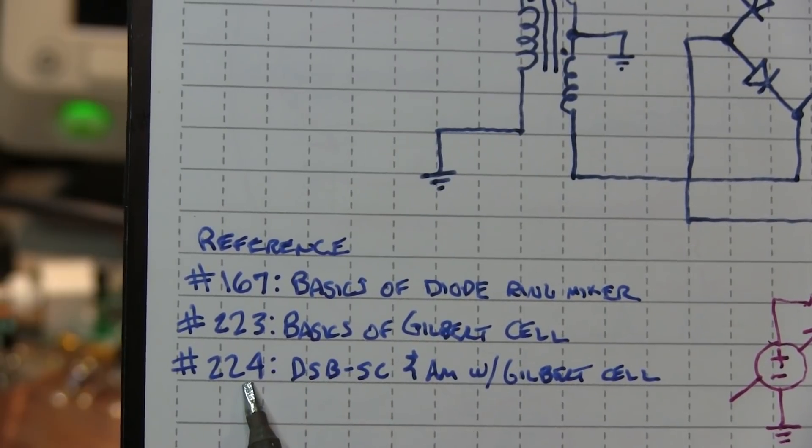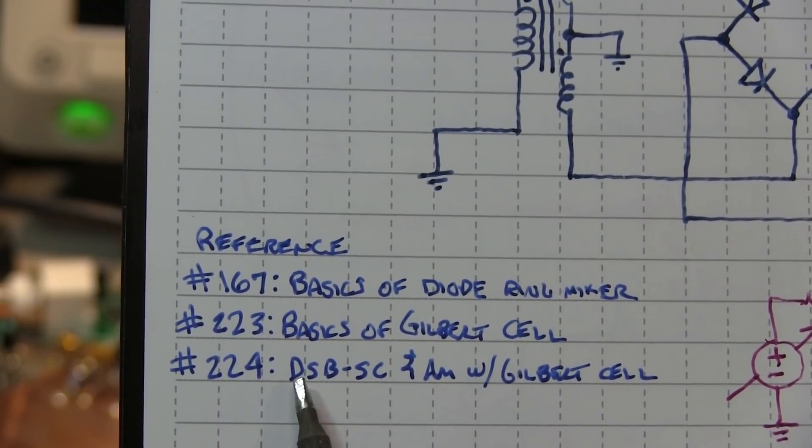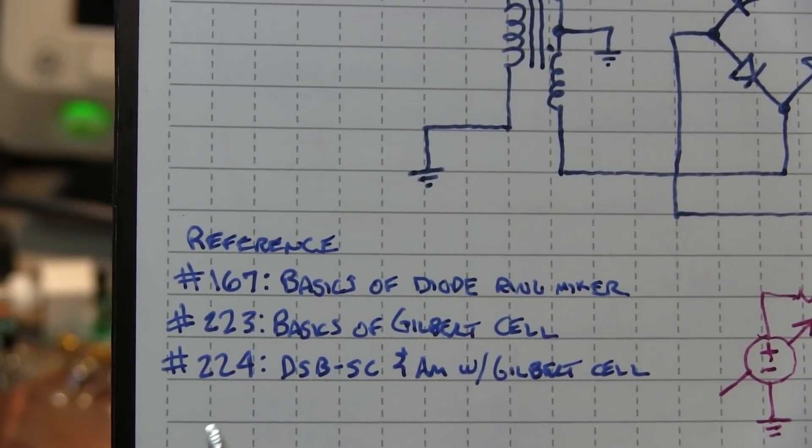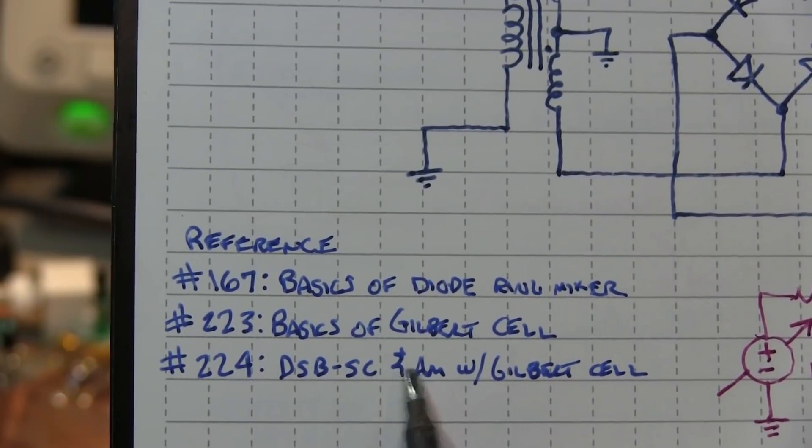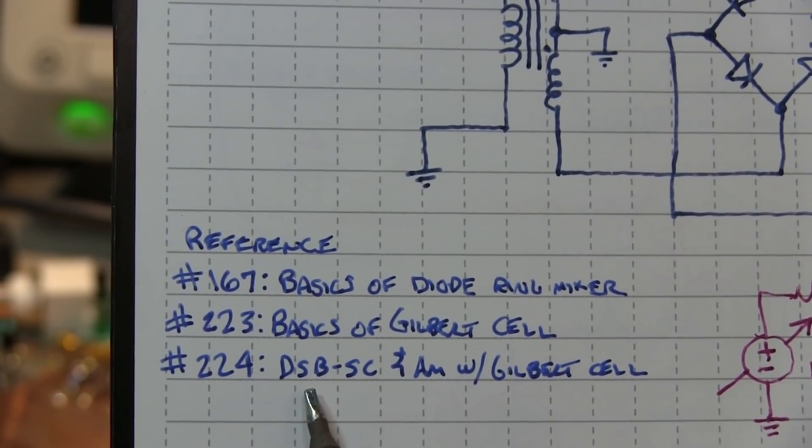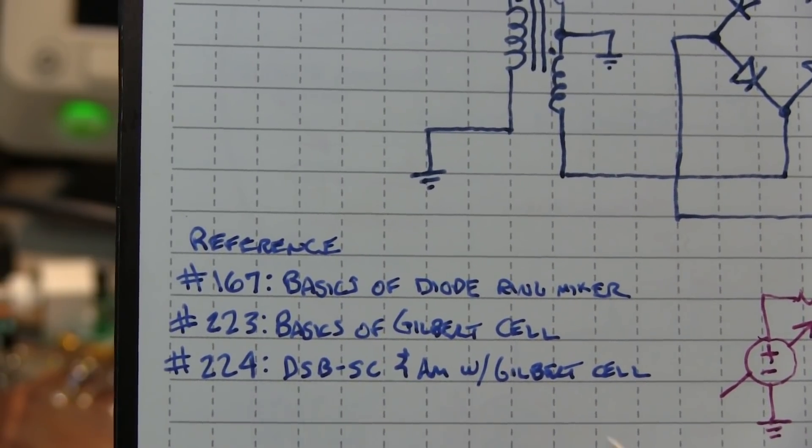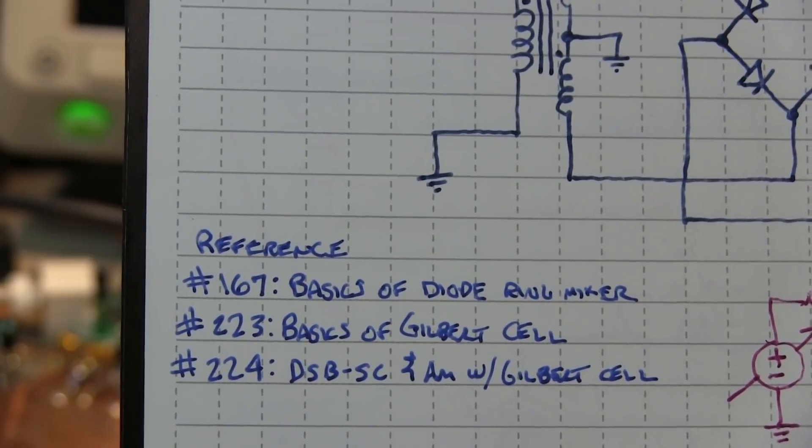And also I showed in video 224 how you can use that as a mixer to generate double sideband suppressed carrier modulated signals, as well as AM. And really the difference between generating either of those two was the amount of bias, DC bias, applied to the baseband input.